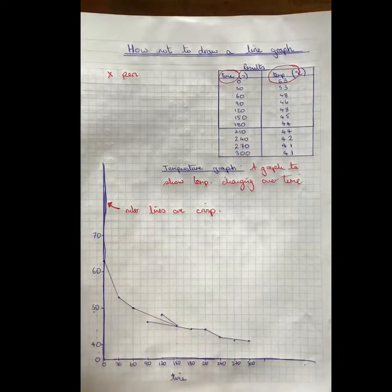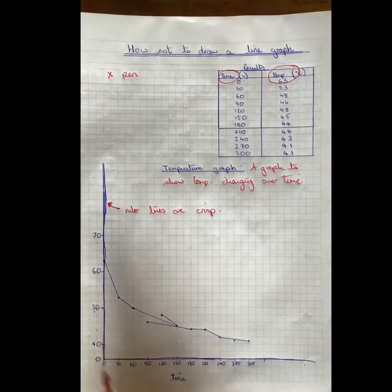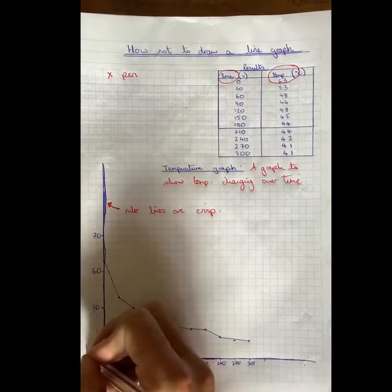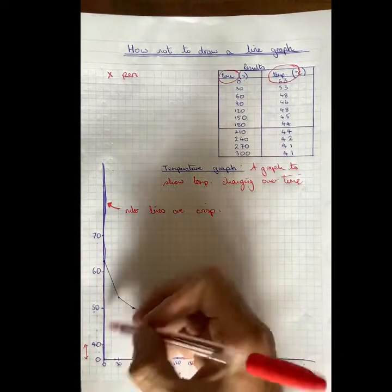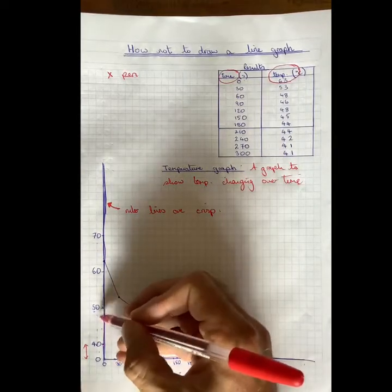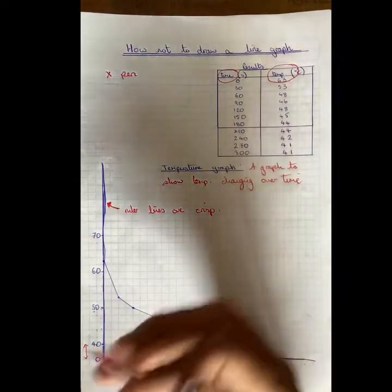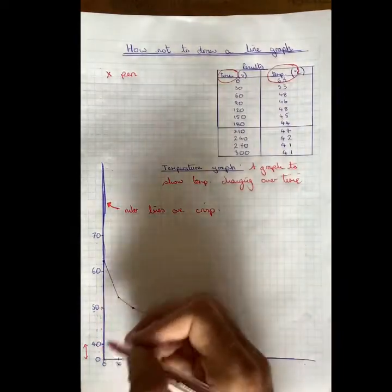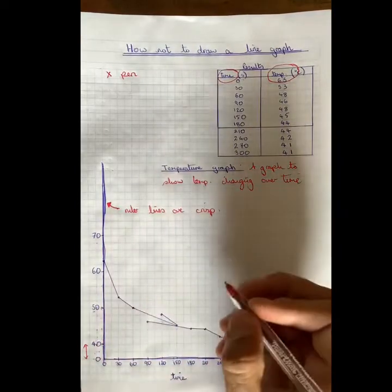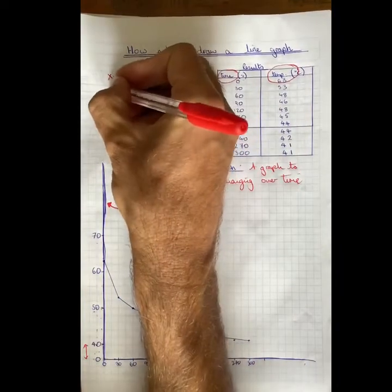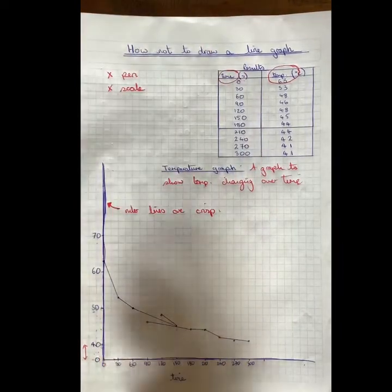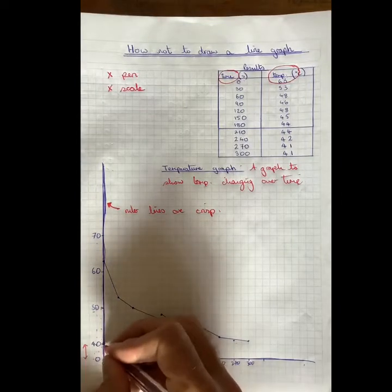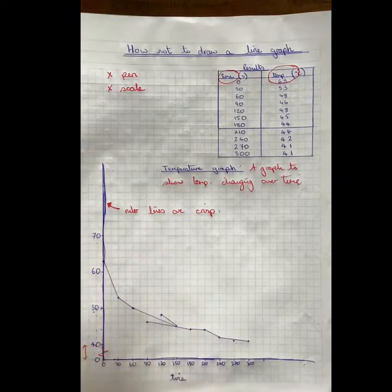Third one, I'm going to bring your attention down to here and I'm talking about scale. From zero to 40 we have two squares, which means each square is worth 20. Then suddenly we've got two for five squares equaling 10. So we've gone from a square being worth 20 to a square being worth two. So always make sure that your scale is correct. If you do need to miss out numbers down here, you can always do the old line like that.